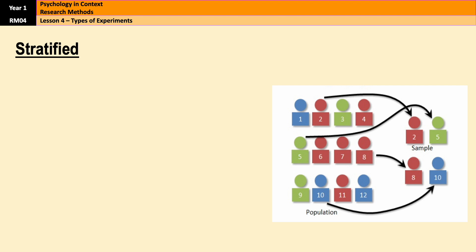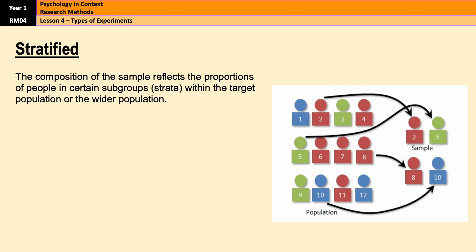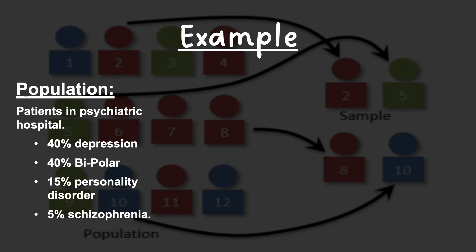Finally we have stratified sampling — a very sophisticated form of sampling in which the composition of the sample reflects the proportions of people in certain subgroups within the target population. The researcher first needs to identify the different subgroups that make up the population, then work out the proportions needed for the sample to be representative, and finally select participants from each subgroup using random sampling.